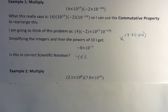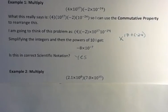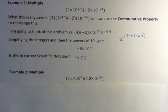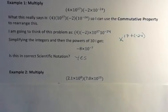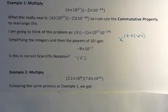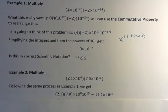Let's take a look at the second example. In this one, we're going to multiply 2.1 times 10 to the 8th and 7.0 times 10 to the 15th. So following the same process that we did in number 1, that is applying the commutative property, we can say 2.1 times 7.0 times 10 to the 8th times 10 to the 15th.